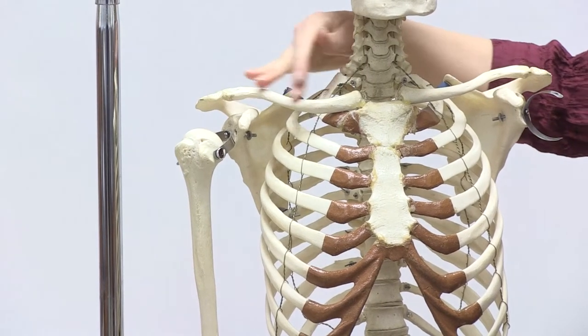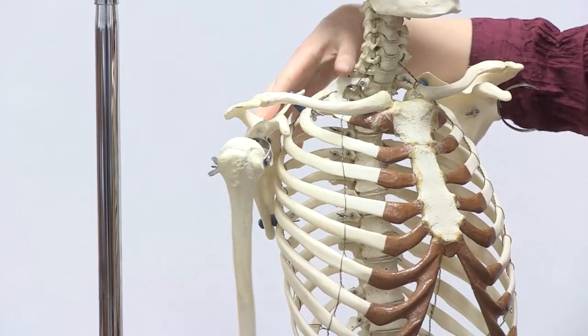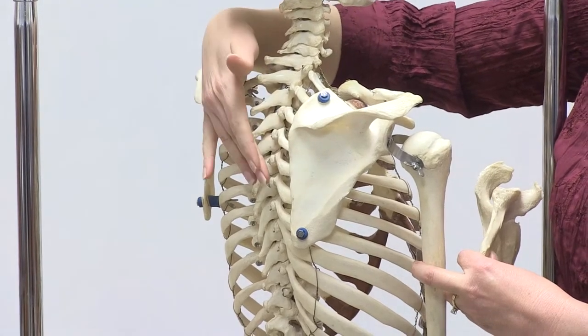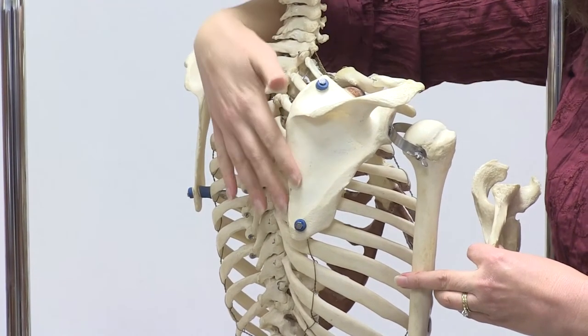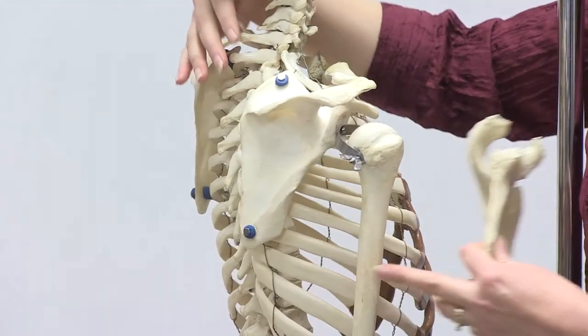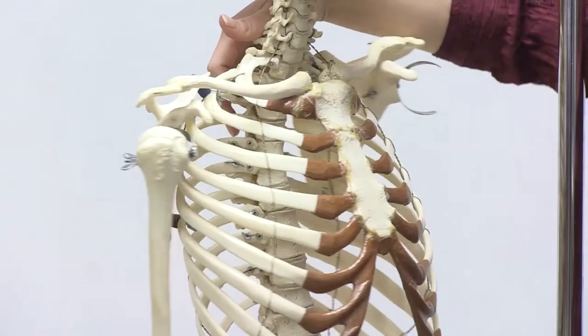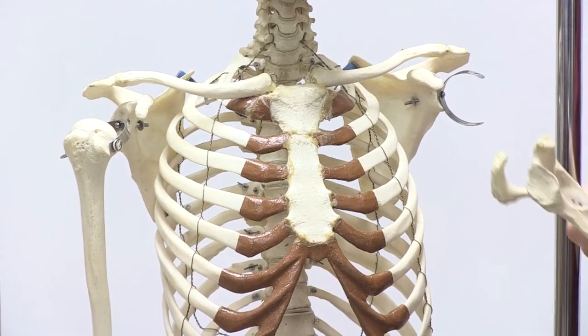Now, even though you might think, well, there's a connection here between the scapula and the thoracic cage, there really isn't. So there is actually no articulation here between the scapula and the thoracic cage. It's just kind of held there by ligaments and muscles and things like that. But if we're looking at the anterior side, and once again, this is the right scapula...